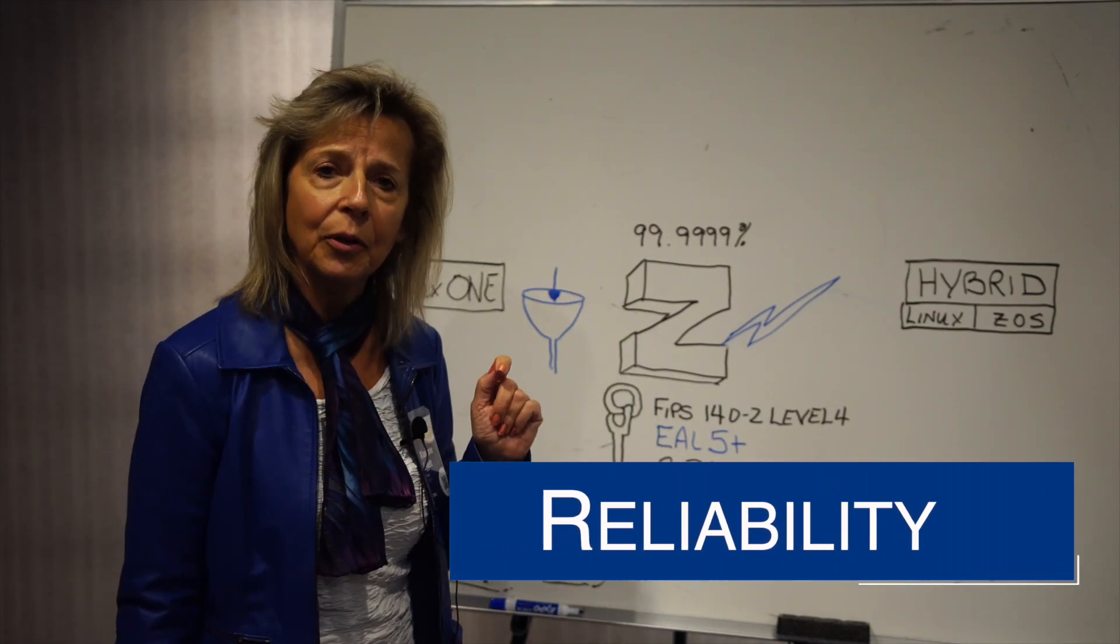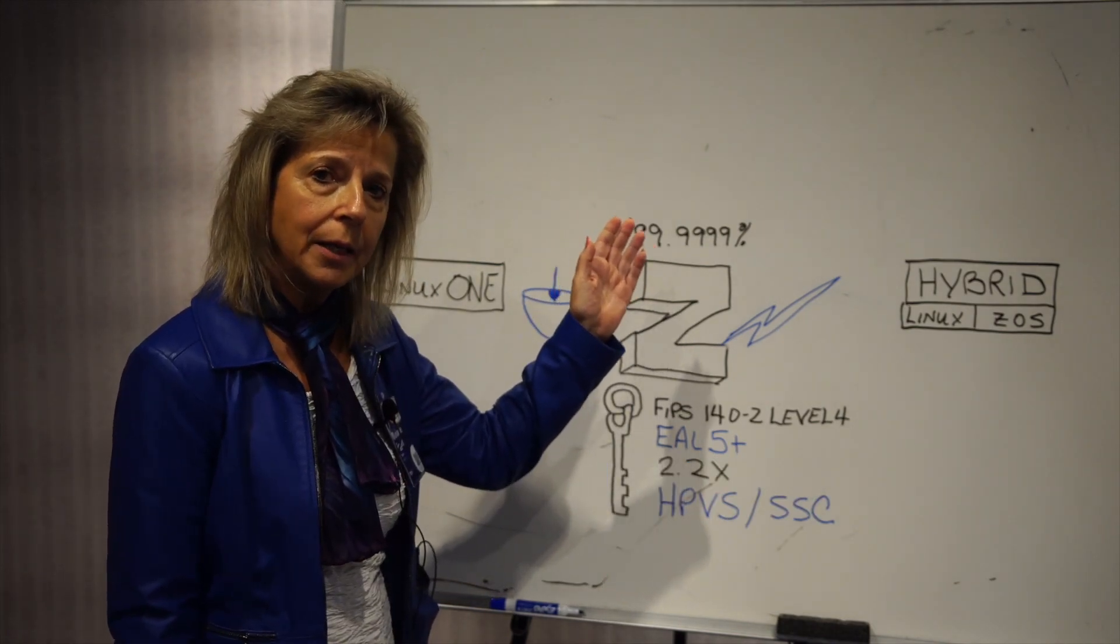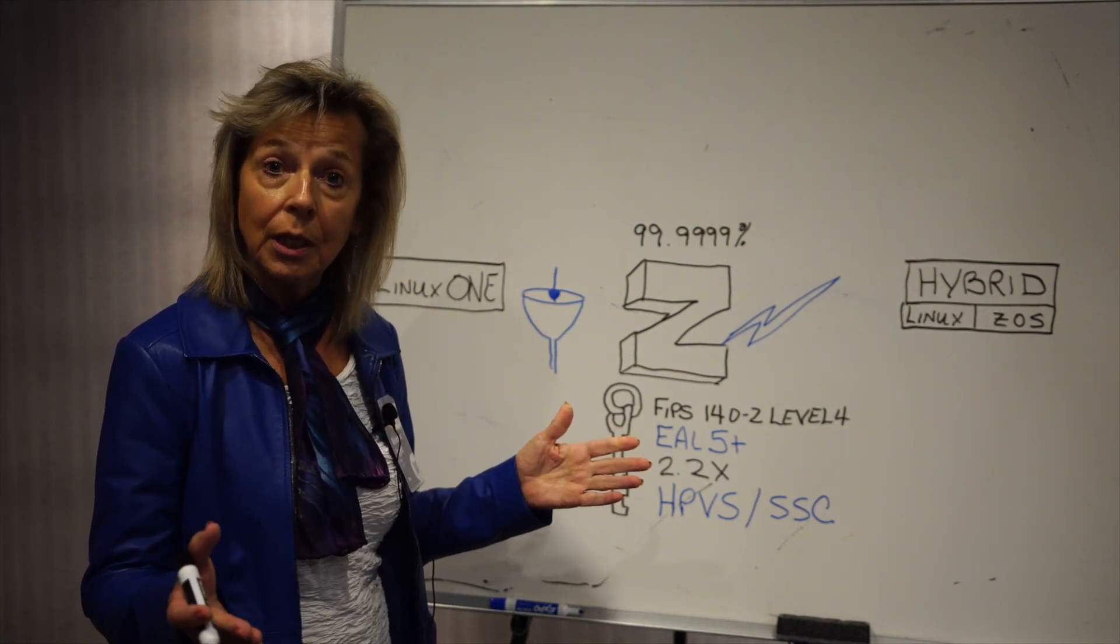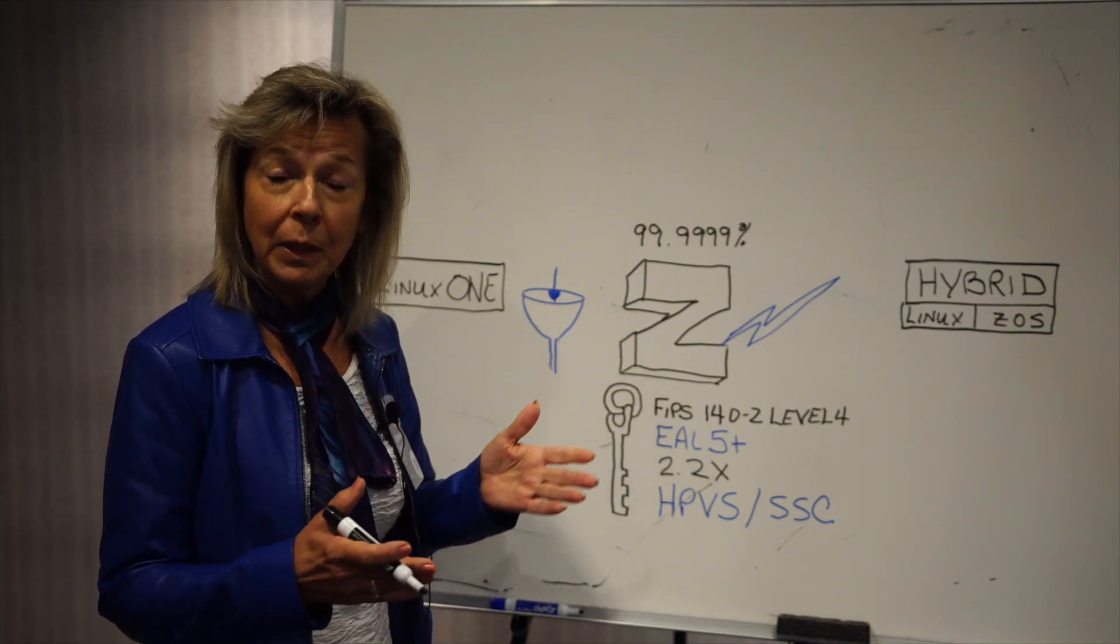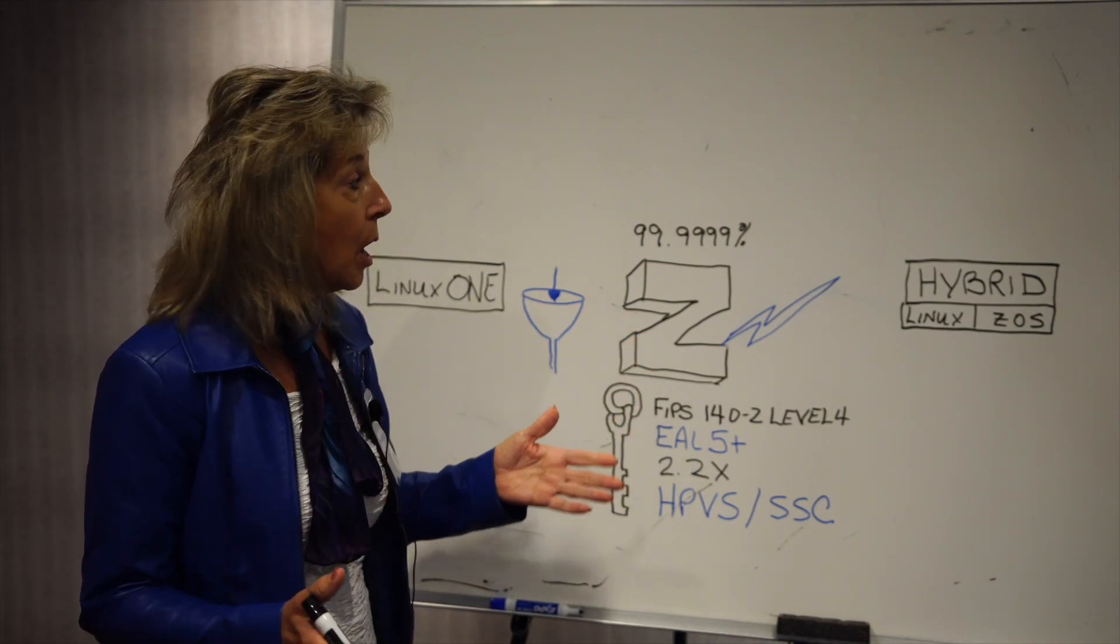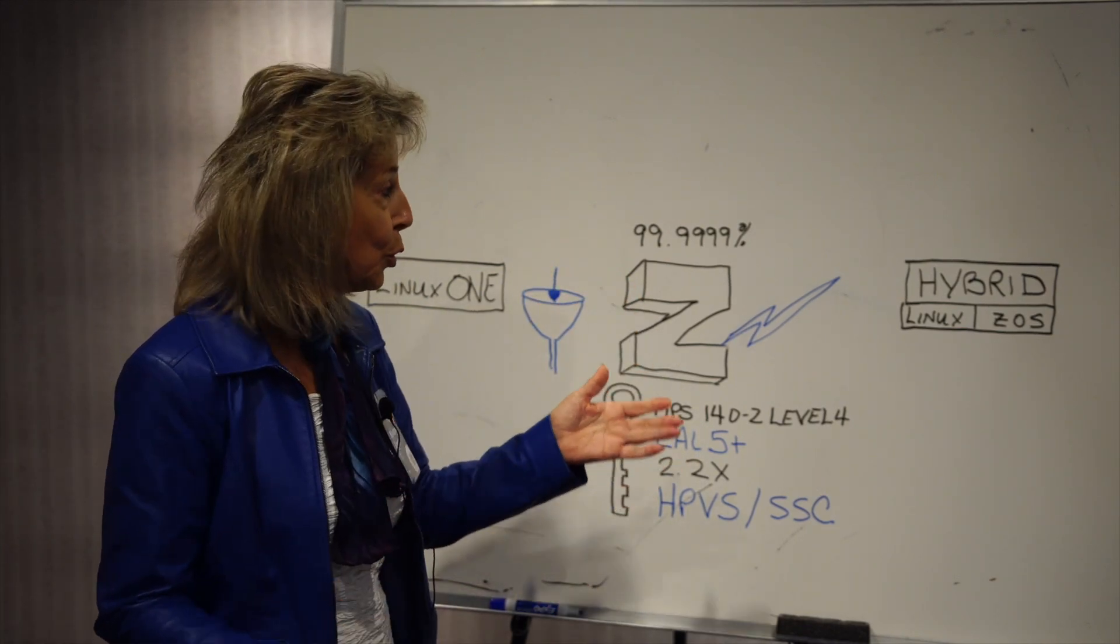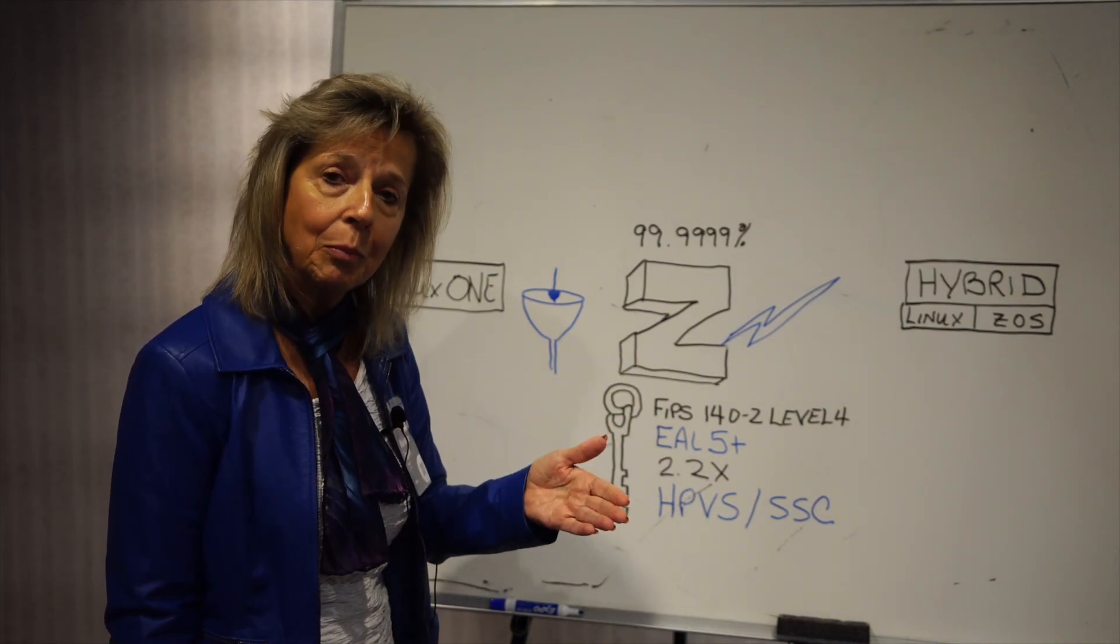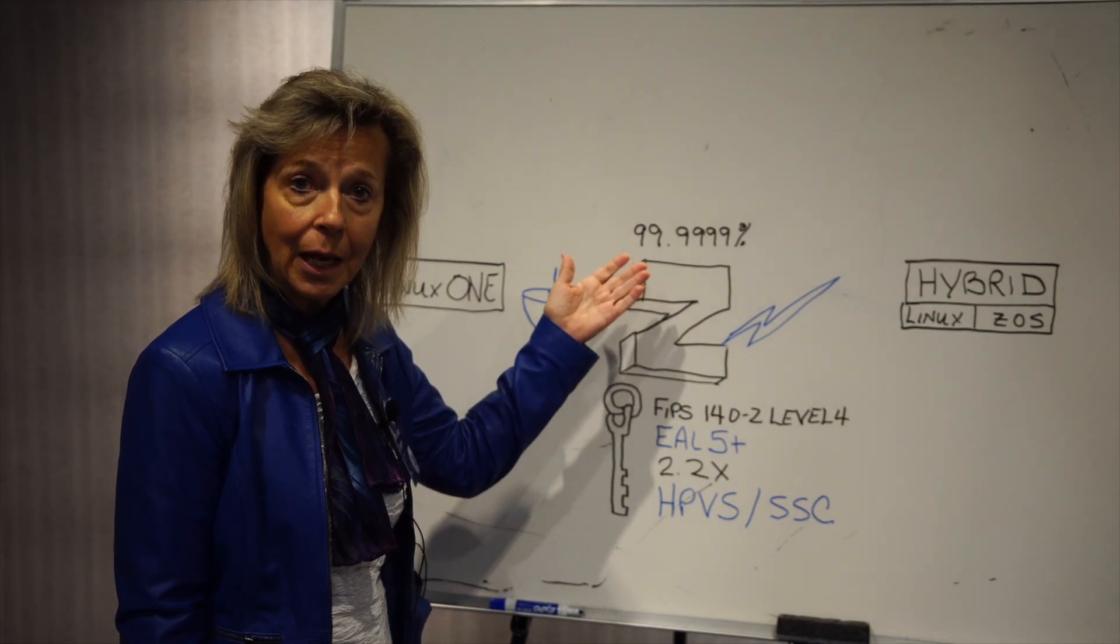First I want to talk about the reliability of Z. The 99.9999% availability on the Z actually can be interpreted as five decades to mean time to failure. IBM has spent decades improving the hardware architecture with redundant components to be able to attain that type of availability on this box.